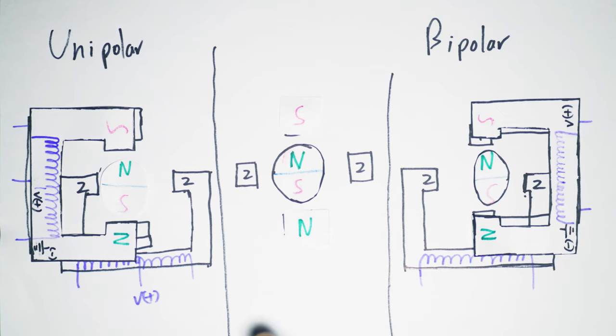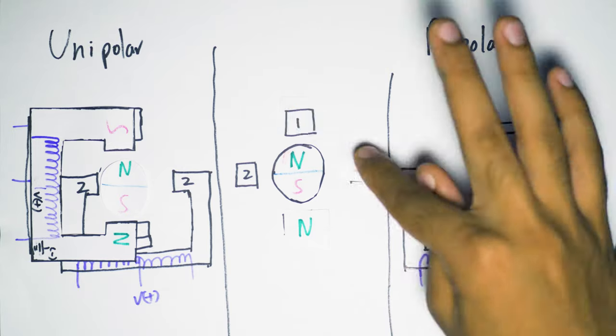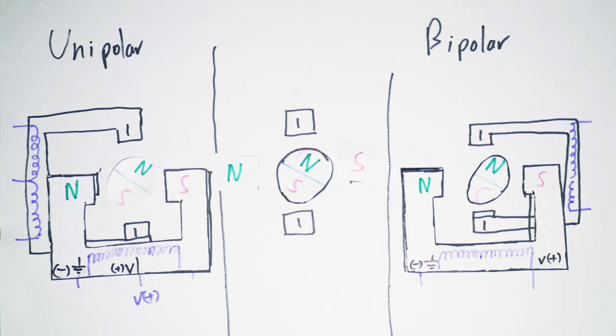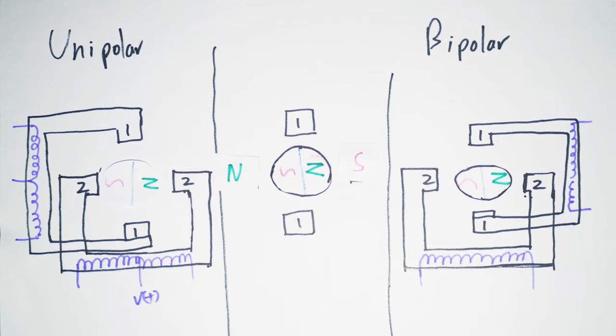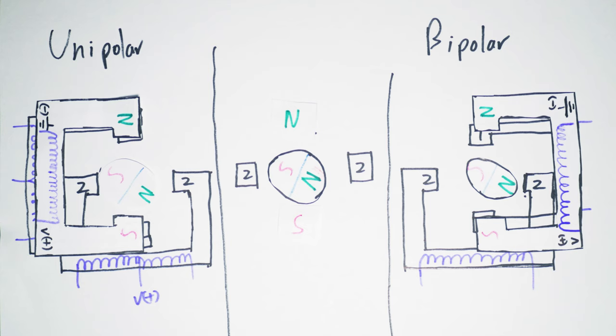Now we're going to continue to do this motion and energize coil one and coil two to keep rotating this motor. Another 45 degrees. Another 45 degrees. And like so, we've moved the center rotor a whole 360 degrees.